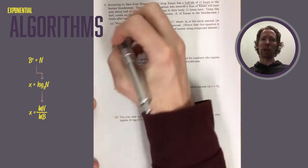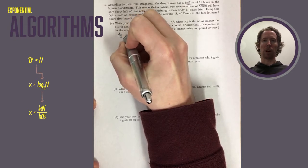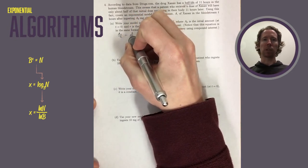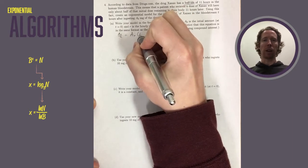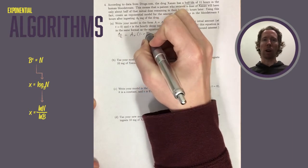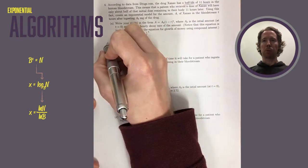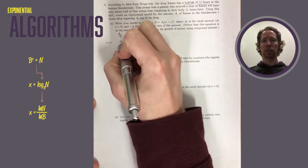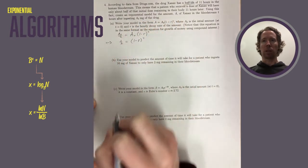Xanax has a half-life of about 11 hours in the bloodstream, so we're going to create an exponential model to make predictions about how much of the drug is in a person's body T hours after they take some initial amount we'll call A-naught. We know that after 11 hours, the amount will be A-naught over 2, so that's the equation that we'll start with.